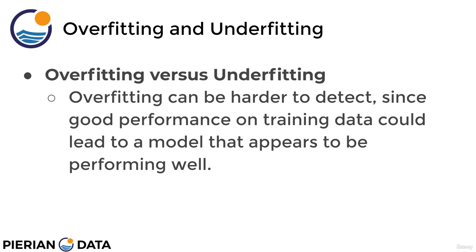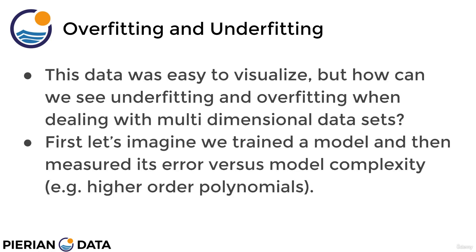Overfitting is so dangerous because it can mislead you due to high performance metrics on the training set. Overfitting can be harder to detect since good performance on training data could lead to a model that appears to be performing well. This particular data set was very easy to visualize because we only had one x feature. But what do we actually do to see underfitting versus overfitting when dealing with multi-dimensional data sets? If I have more than one x value, at a certain point it's going to be impossible to plot out the model itself against the training and test data sets, and I won't be able to visually tell if my model is overfitting or underfitting. So what I have to do is plot out my error versus my model complexity. Model complexity is a general term that applies to more than just polynomial regression — in the case of polynomial regression, when we say a model is more complex, that means it's a higher order polynomial.